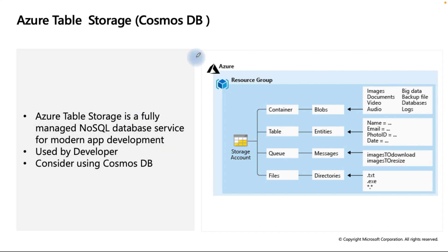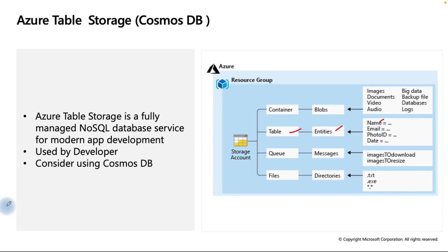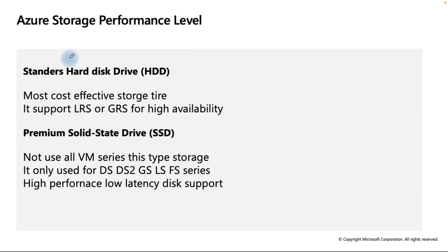Azure Table Storage is similar to Cosmos DB. It's a fully managed NoSQL database service for modern app development — a non-relational database. You can see table entities with fields like name and email, similar to a database structure. You should also consider using Cosmos DB.